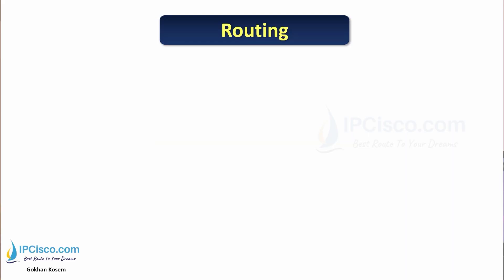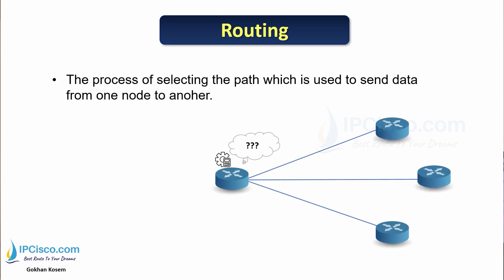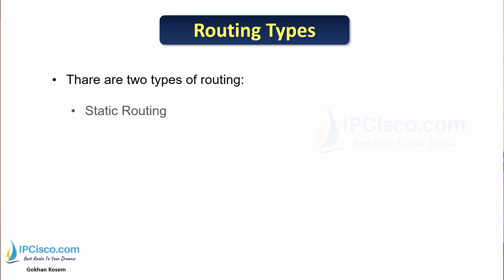What is routing? Routing is the process of selecting the path which is used to send data from one node to another. It works on Layer 3 and it works on routers. Routers do route calculations, and with these route calculations they determine the best path. After that, a router sends the data to the related destination.